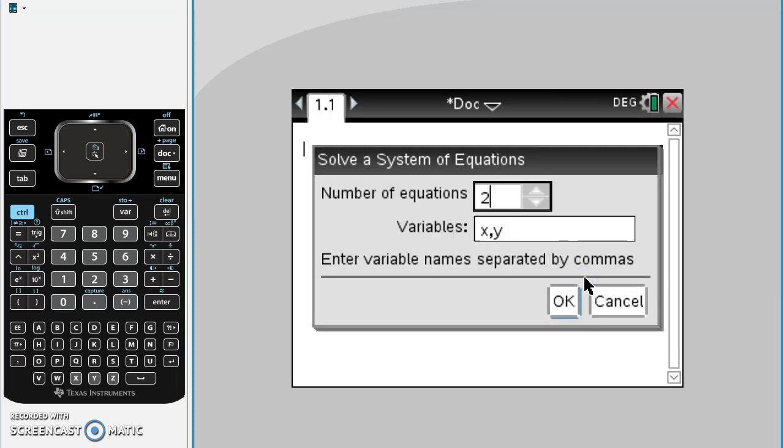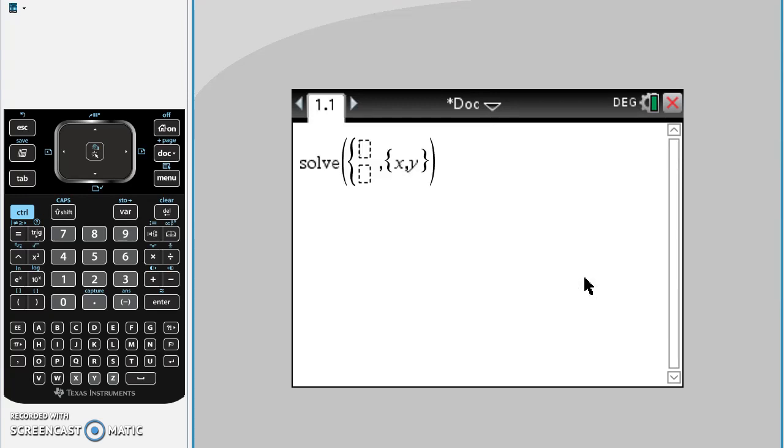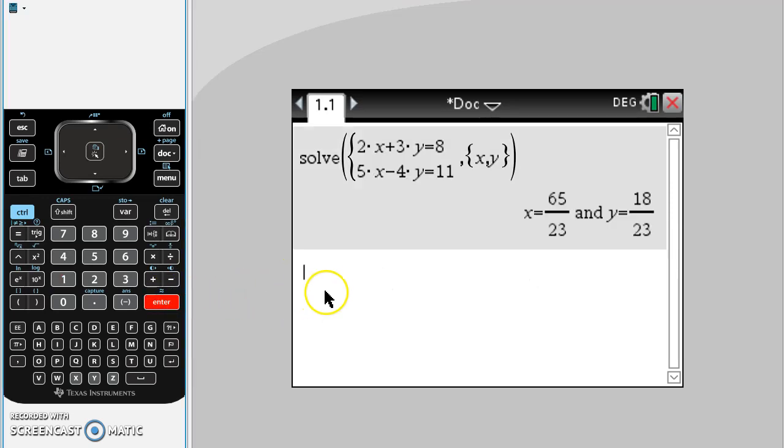Now let's enter the equation 2x plus 3y equals 8 and we have 5x minus 4y equals 11. We press enter and that's our answer, x equals and y equals. I'll show you what would have happened if we did the linear solve.